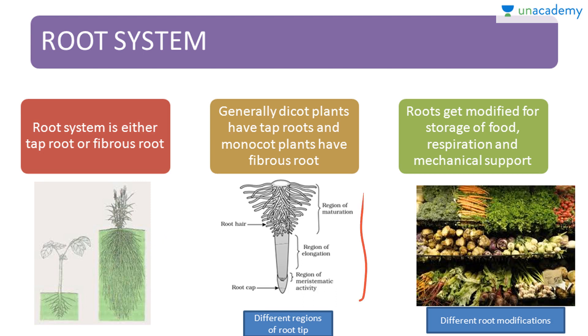Roots get modified for storage of food, respiration, and mechanical support. These are the different root modifications, like carrot.